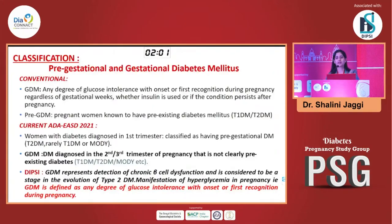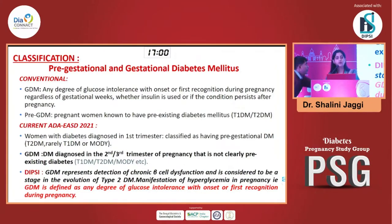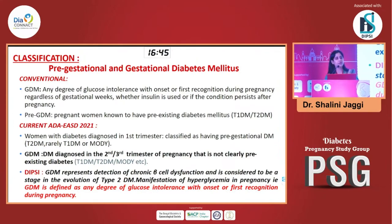Starting with the classification of hyperglycemia in pregnancy. Conventionally there have been a lot of confusions. We all understood that gestational diabetes was the term used for any degree of glucose problems diagnosed in pregnancy for the first time, irrespective of whether she had it before or was not aware. So the first time we were thinking of diabetes in pregnancy, we called it gestational diabetes.